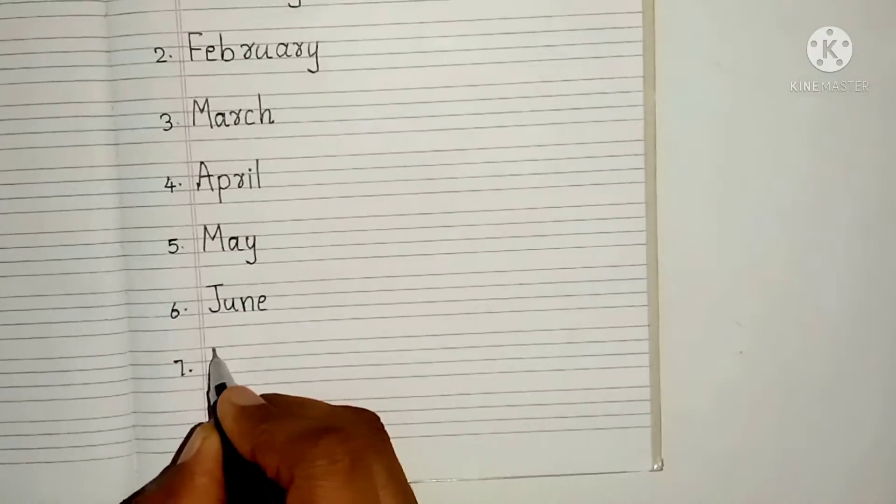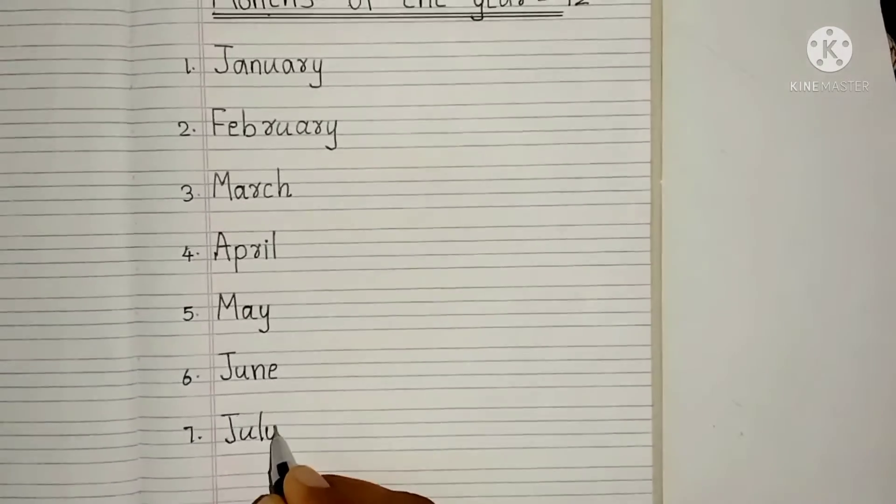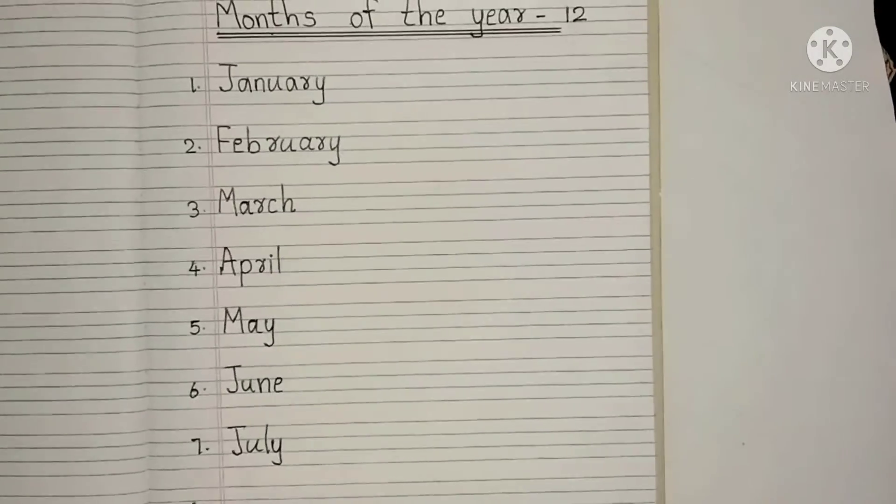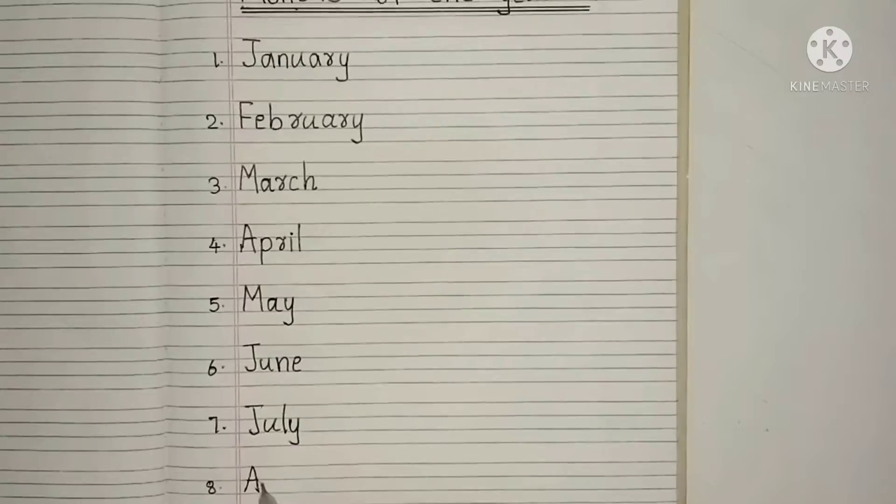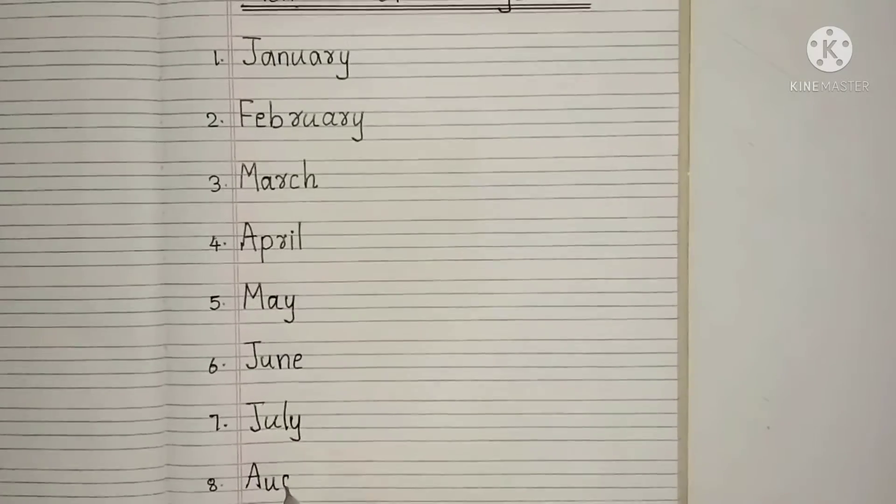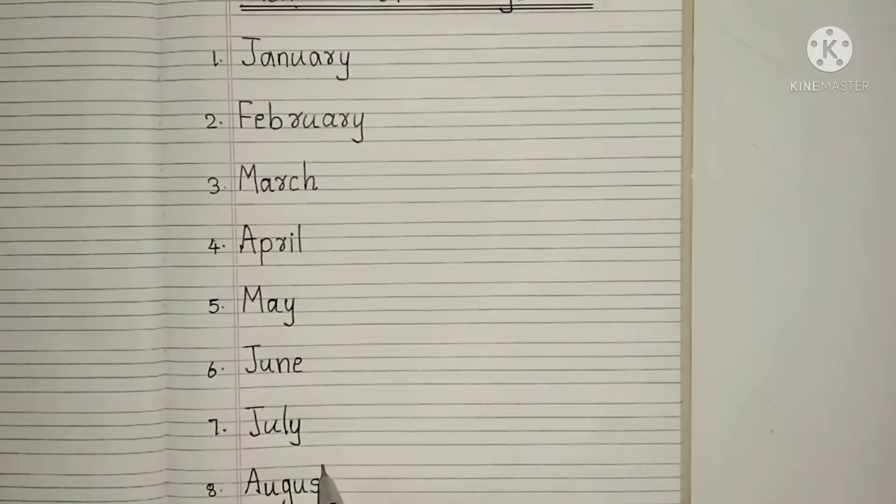Seventh month is J, U, L, Y. July. Eighth month is A, U, G, U, S, T. August.